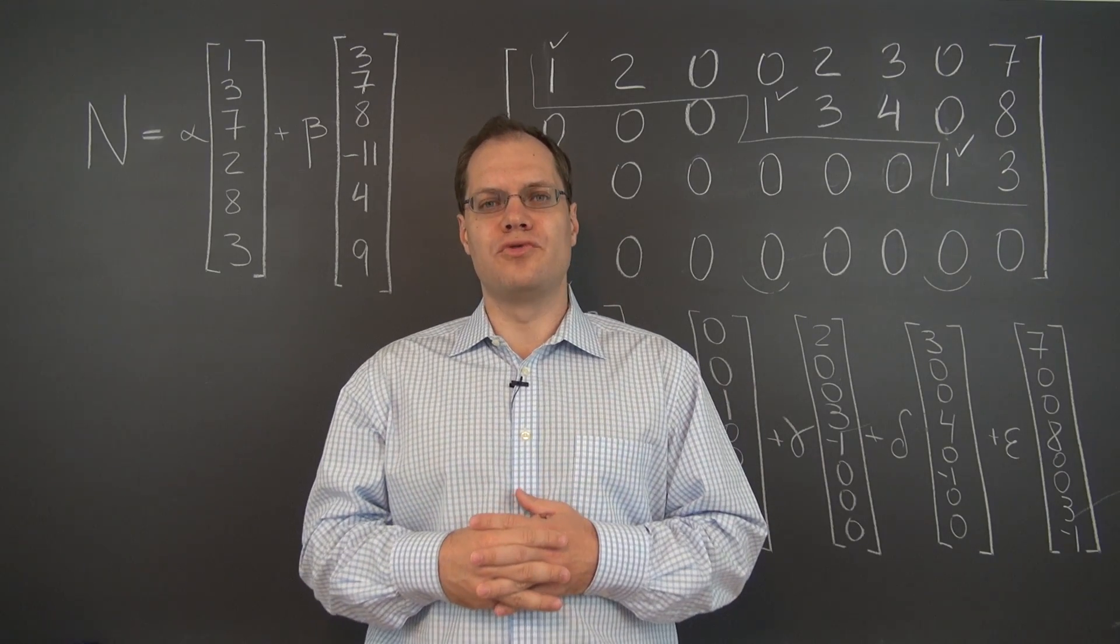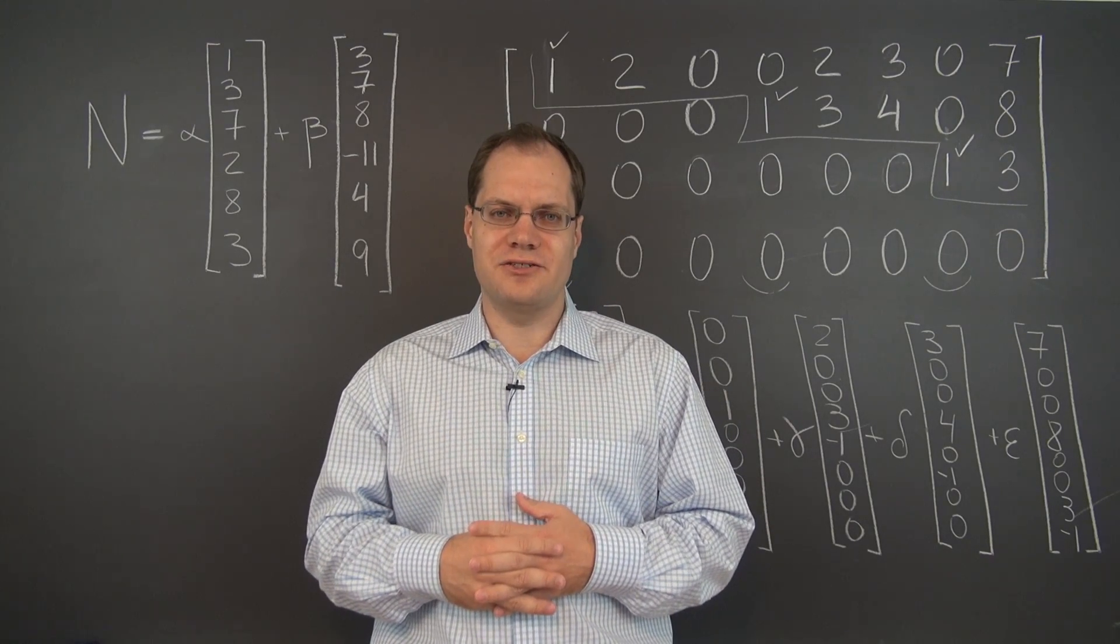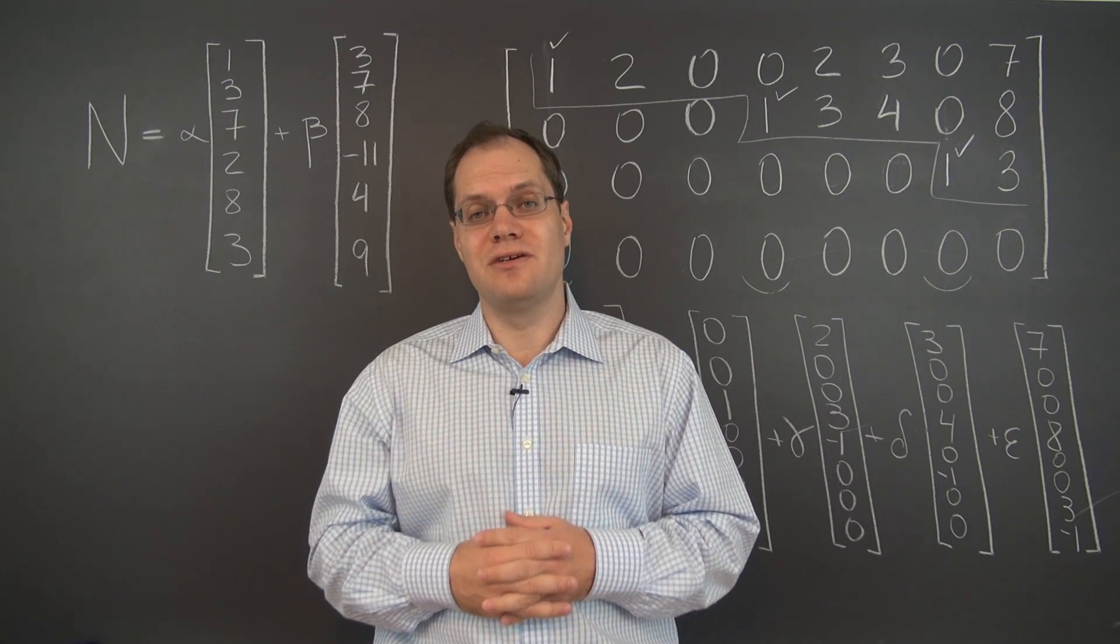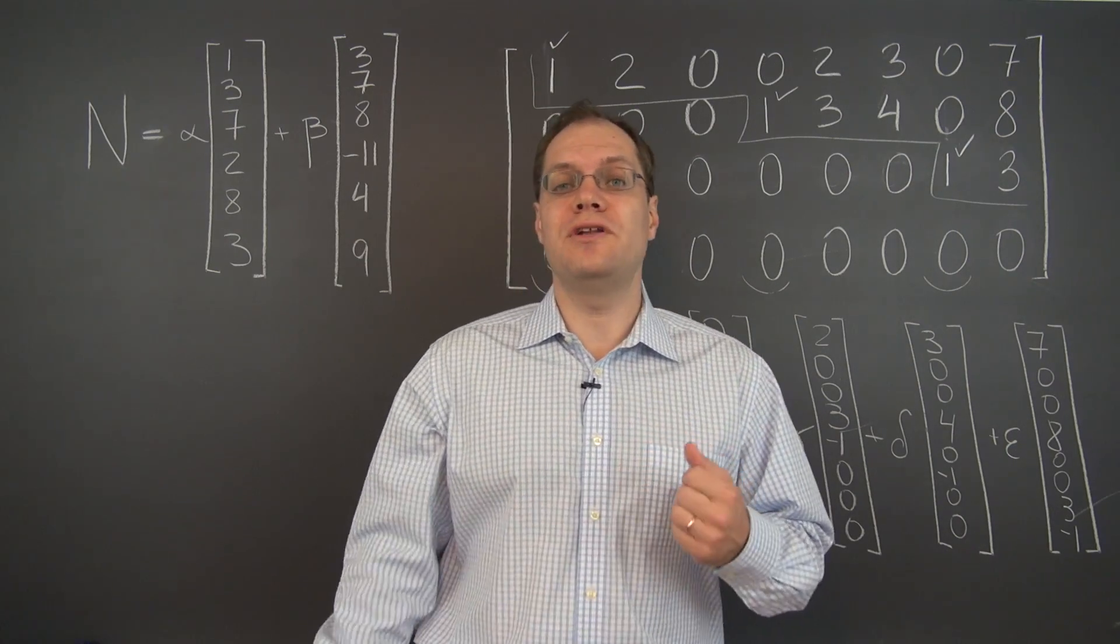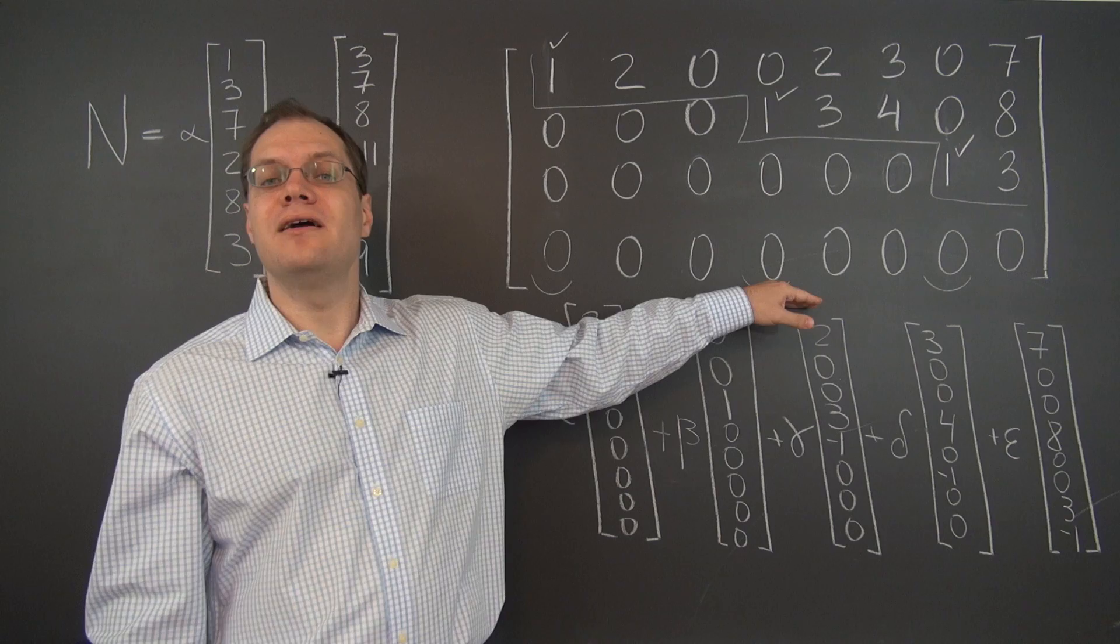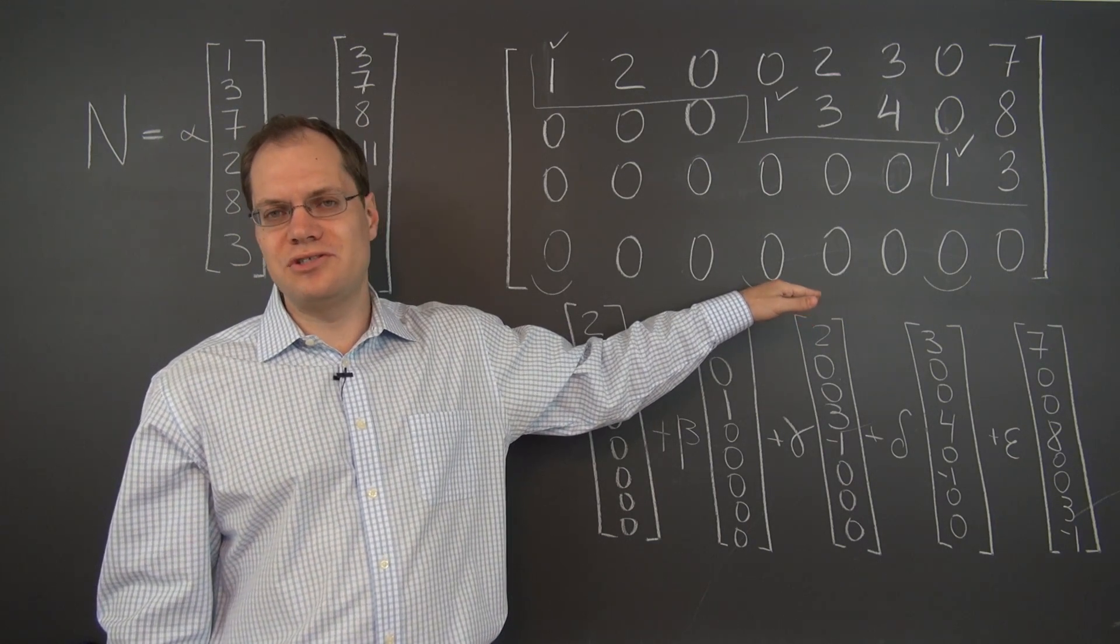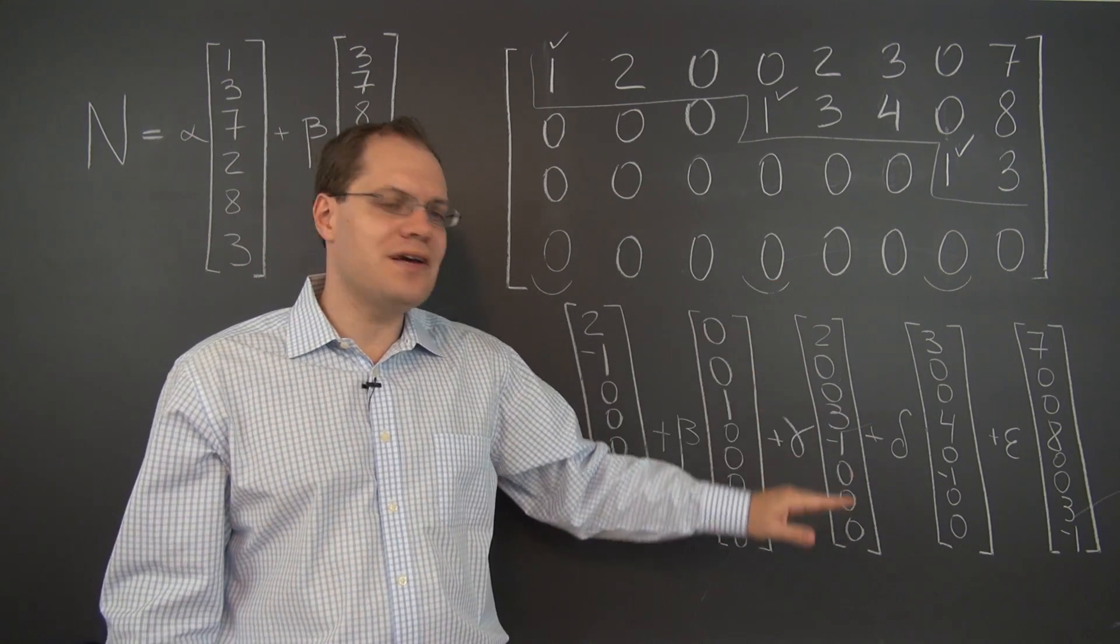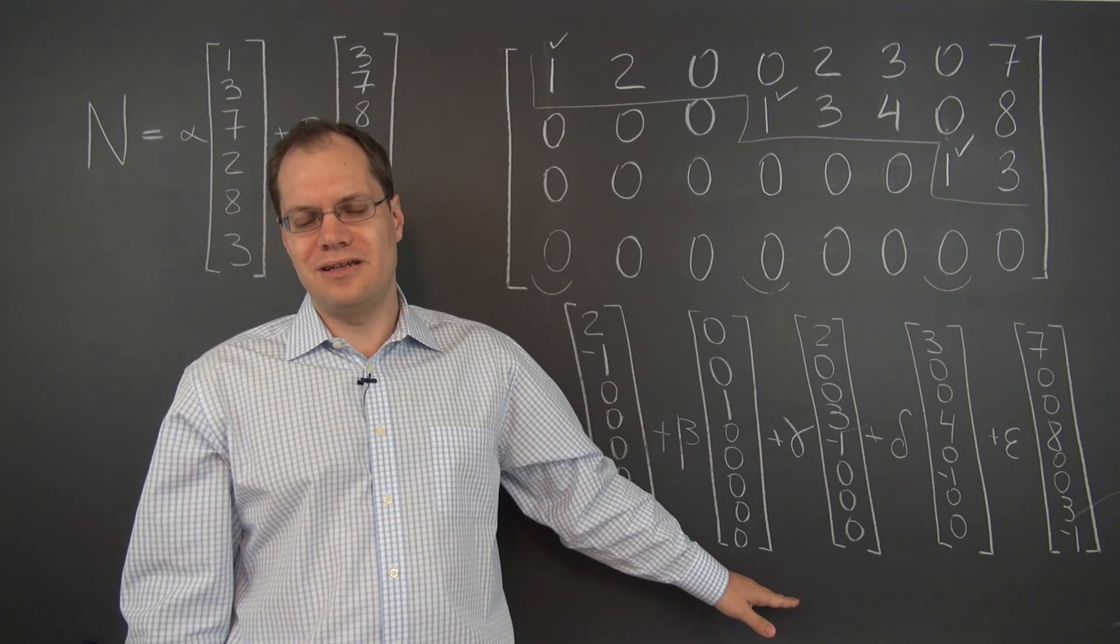Now it's time for a row reduced echelon form challenge, and it's a fantastic question to think about. What we know by now is that if we have a matrix in the row reduced echelon form, then it's very easy to determine the null space.